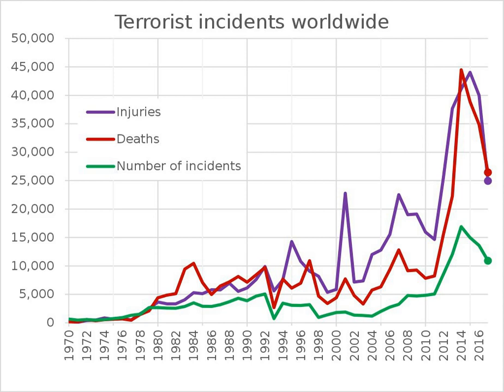The GTD describes itself as the 'Most Comprehensive Unclassified Database on Terrorist Events in the World' and includes over 170,000 terrorist attacks in the June 2017 version. The entire database is available for download via the website. The GTD includes more than 83,000 bombings, more than 18,000 assassinations, and more than 11,000 kidnappings.